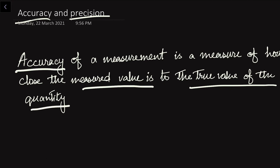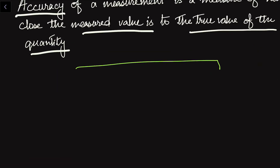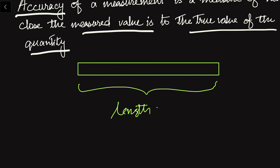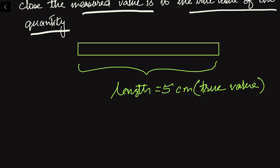Suppose if we measure a quantity, the question is how close the measured value is to the true value if there are no errors. Suppose we have a rod here. Suppose the length is equal to 5 cm — this is the true value. That is, if we measure this rod's length and there is no error in the measurement, then the value is 5 cm. So this is the true value with no error in the measurement.